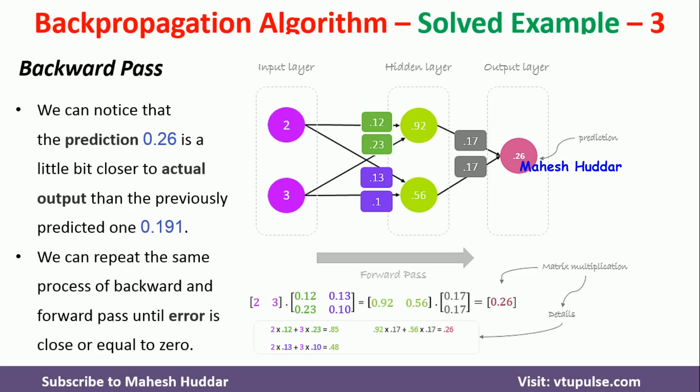In this video, I have discussed how to build a neural network, how to assign the weights, how to calculate the error at the output layer, and how to modify the weights with respect to the error at the output layer. I hope the concept is clear. If you like the video, do like and share it. Press the subscribe button for more videos and the bell icon for regular updates. Thank you for watching.